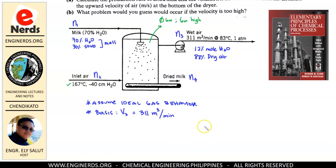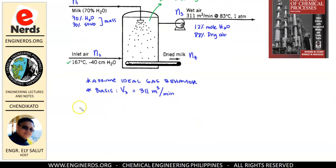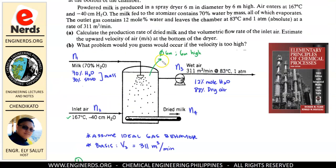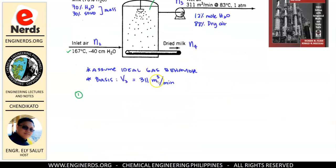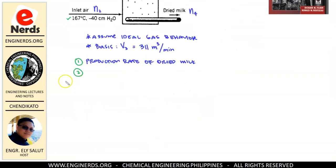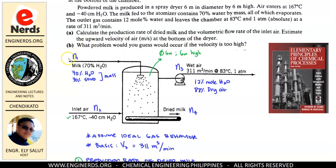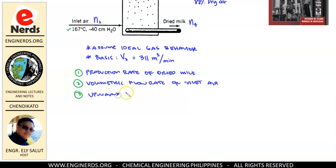Let us write down what we need to find. First, we need to get the production rate of dried milk. Second, we need to get the volumetric flow rate of the inlet air. Third, we need to get the upward velocity of air.